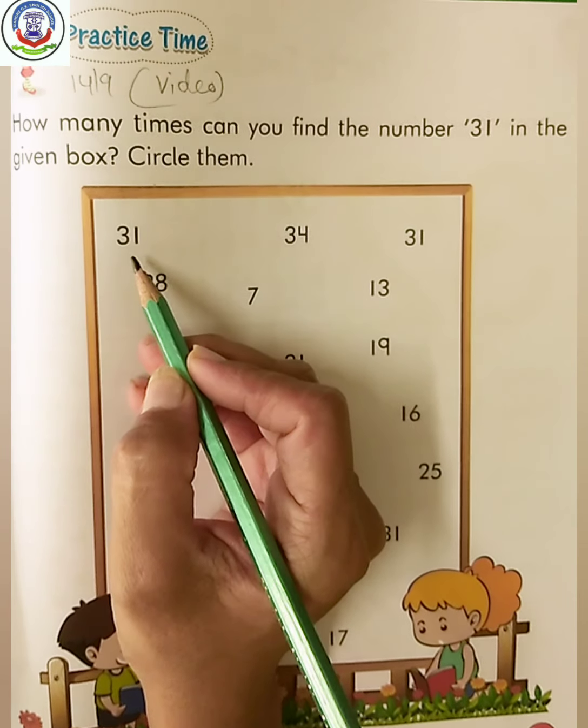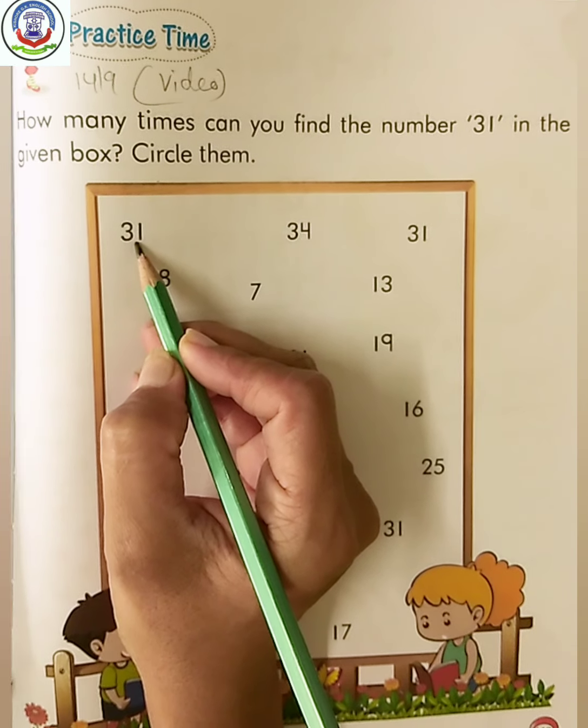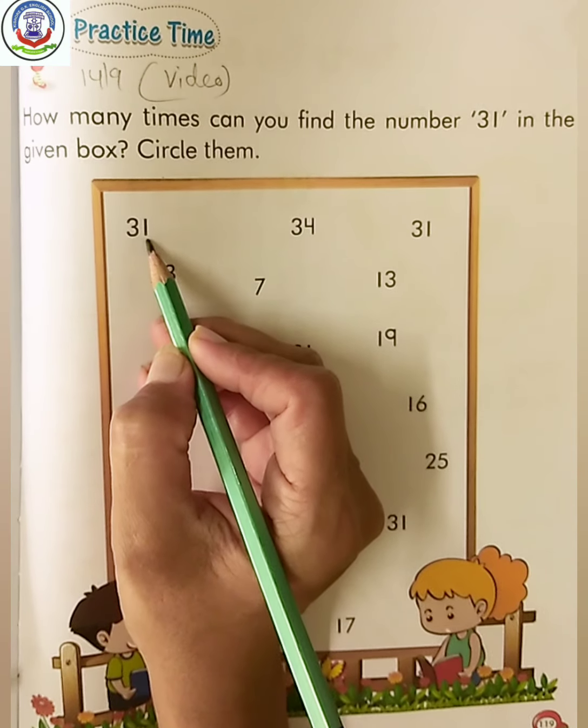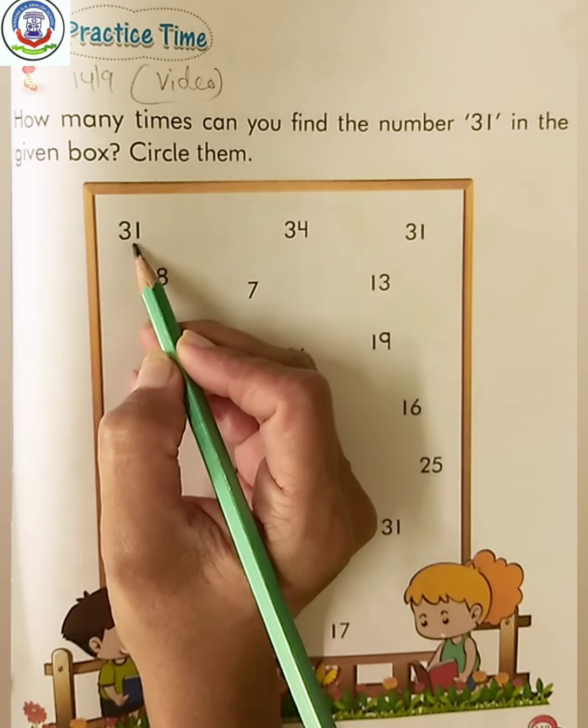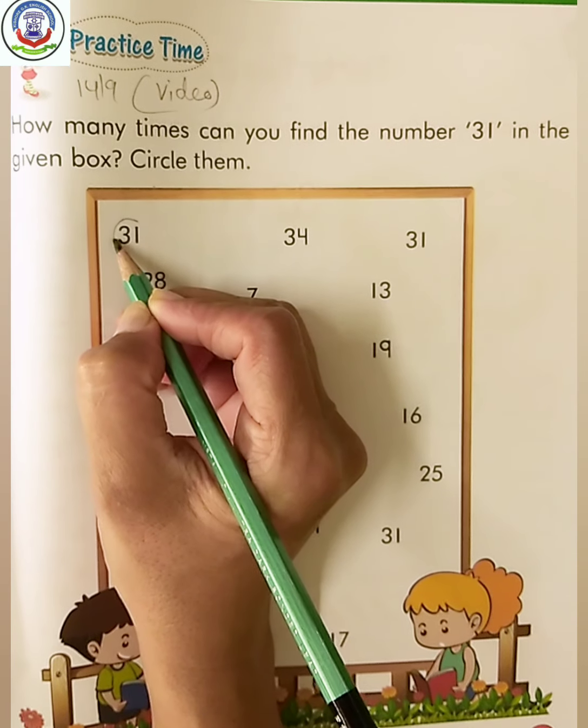Here is number 31. 30 plus 1 is 31. So we will circle this number like this.